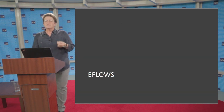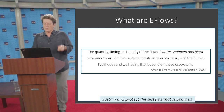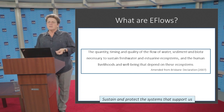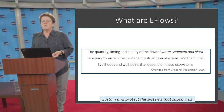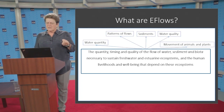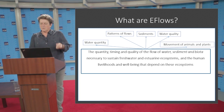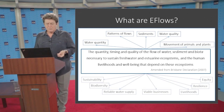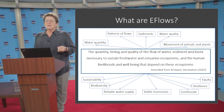That brings us to environmental flows, or e-flows. What are e-flows? They are the quantity, timing, and quality of the flow of water, sediment, and biota necessary to sustain freshwater and estuarine ecosystems and the human livelihoods and well-being that depend on those ecosystems. They're not only about a minimum amount of water — they are about the quantity of water, the pattern of flow, the flow of sediments, the quality of that water, and the movement of animals and plants. They are necessary for sustainability, but also for promoting biodiversity, equity, resilience, livelihoods, reliable water supply, and even viable businesses.